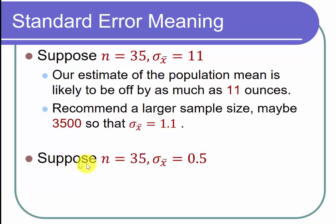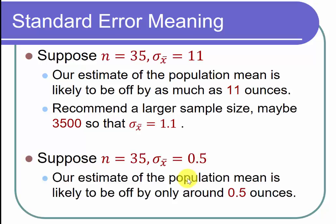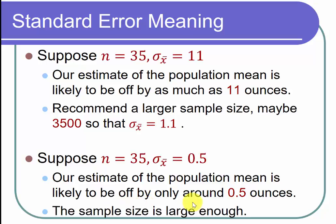On the other hand, suppose our sample size is 35 and the standard error is 0.5. Now we're talking about being off by half an ounce of water — that's not going to harm a marathon runner either way. Our estimate of the population mean is only off by a little bit, so we're very happy with that standard error because the sample mean is likely to be very close to the population mean, and we have good information.